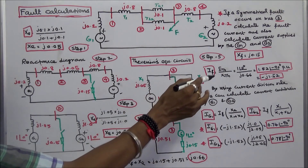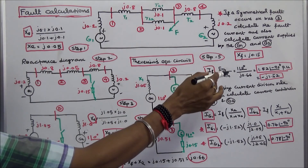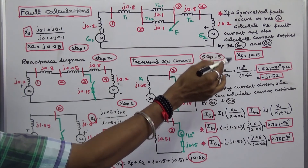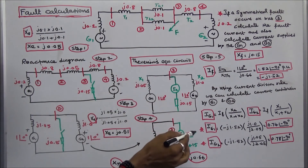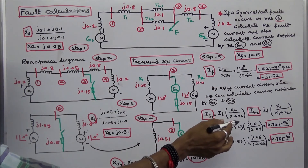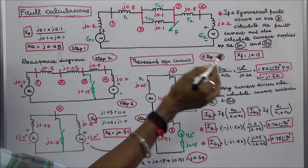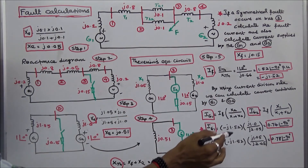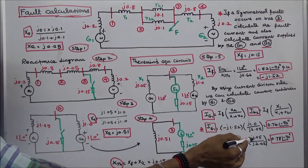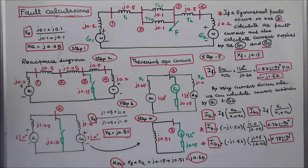To summarize: the fault current is 1.52 angle minus 90 degrees per unit, the current supplied by generator 1 is 0.74 angle minus 90 degrees, and the current supplied by generator 2 is 0.78 angle minus 90 degrees per unit. This is how we work out this problem. Thanks for listening.